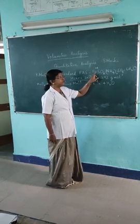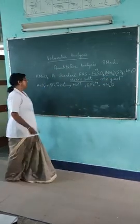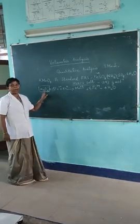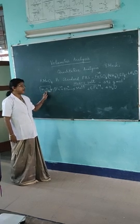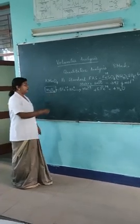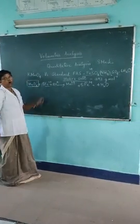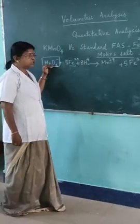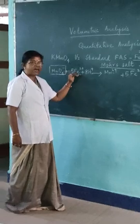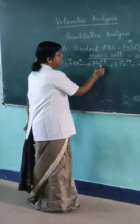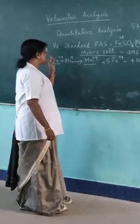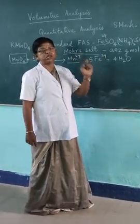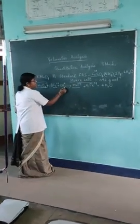So we are using ferrous ammonium sulfate solution. Potassium permanganate has permanganate ions MnO4⁻, which function as an oxidizing agent, and Fe²⁺ of Mohr's salt functions as a reducing agent. In other words, permanganate ions oxidize ferrous ions, getting themselves reduced, while ferrous ions are oxidized to ferric ions. This process happens best in acid medium.